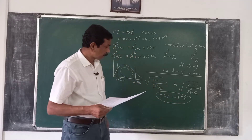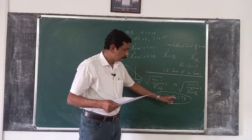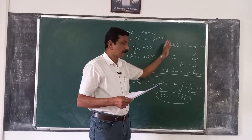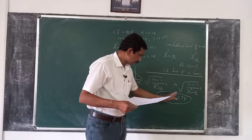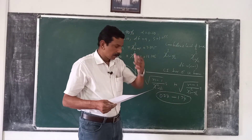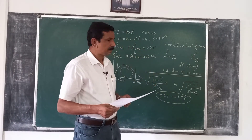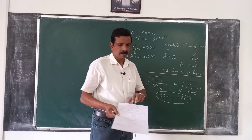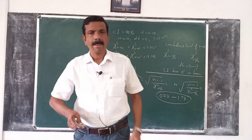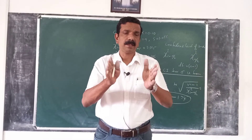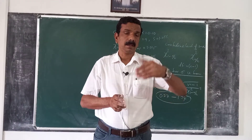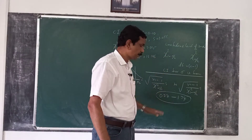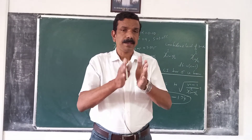This is the 90 percent confidence interval for the population standard deviation, where the sample value obtained is 1.055. We are 90 percent confident that the population standard deviation lies between these two intervals. That is, if you construct such intervals a repeated number of times, then 90 out of 100 times such intervals will include the true but unknown population standard deviation.